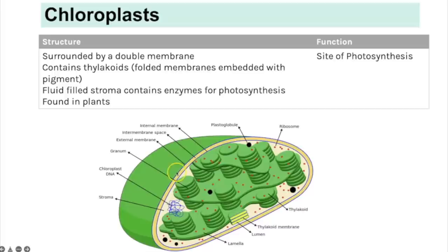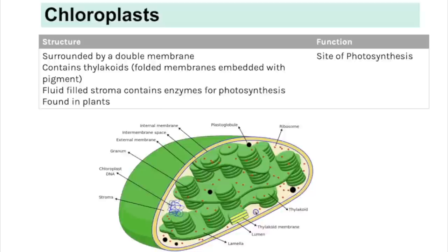Chloroplasts are only found in plants and are the site of photosynthesis. They are a double membrane organelle with an outer and inner membrane. Inside there are additional thylakoid membranes which stack to create grana (singular: granum). The thylakoid membranes are embedded with proteins and pigments such as chlorophyll — they are the site of the light-dependent reactions. The stroma is the fluid surrounding the thylakoids and contains enzymes needed for the light-independent stages of photosynthesis.